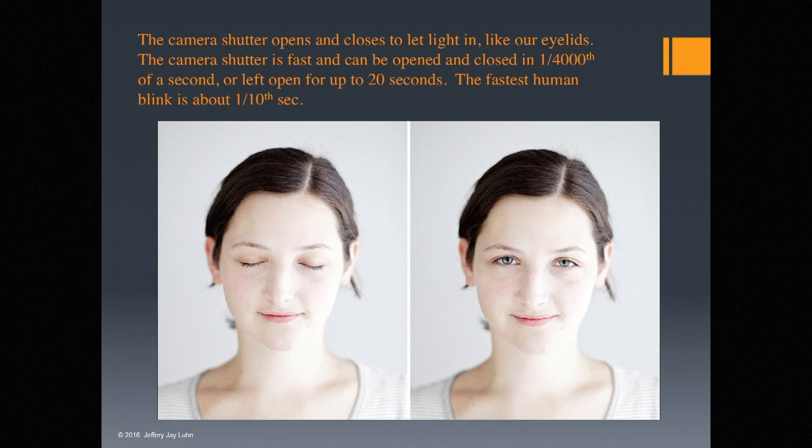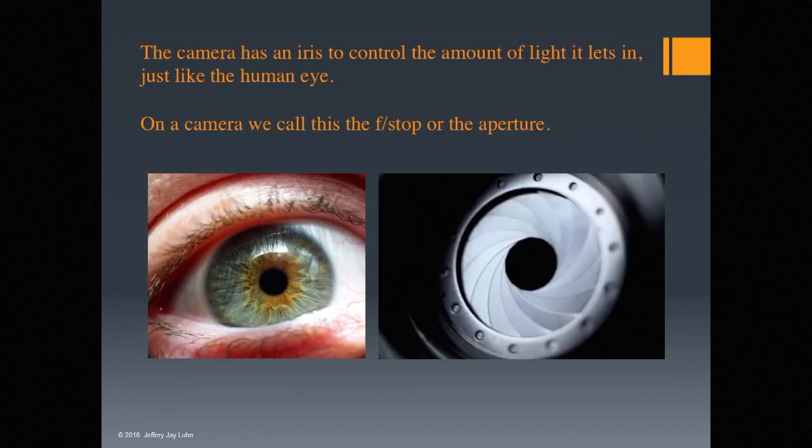The camera shutter is fast and it can be opened and closed in a four-thousandth of a second, or it can be left open for up to 20 seconds. Now the fastest human blink is about a tenth of a second. The camera has an iris to control the amount of light it lets in, just like the human eye.